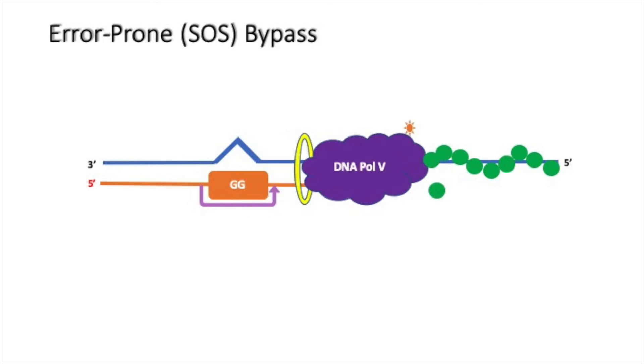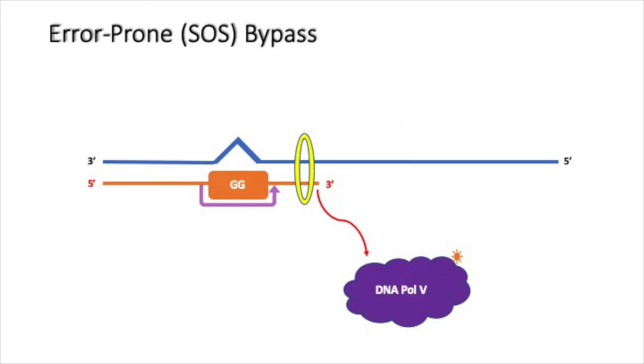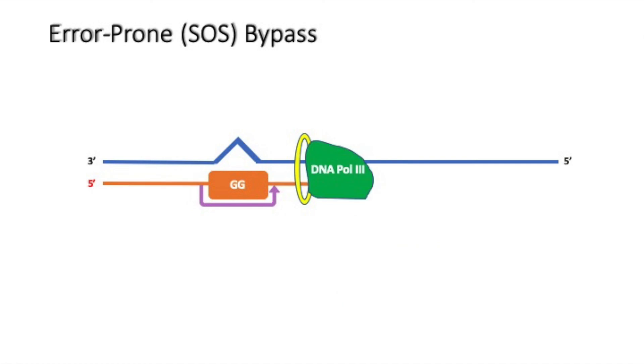As DNA polymerase 5 proceeds, RecA dissociates from template DNA. After the lesion is bypassed by DNA polymerase 5, DNA polymerase 3 can again take over and continues the replication process.